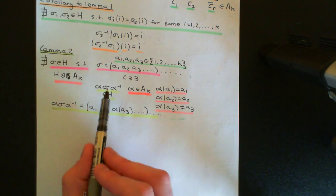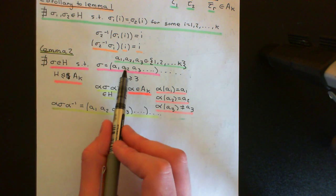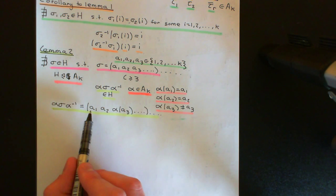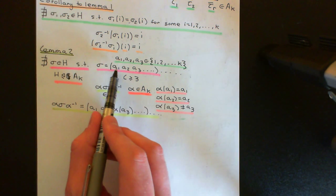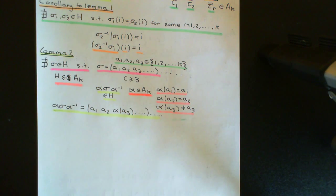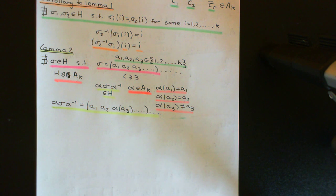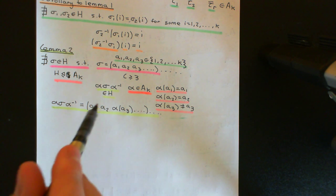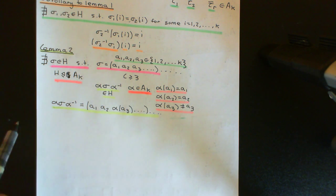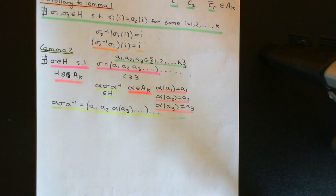I've got another element that must be in H, and I claim this breaks the corollary to Lemma 1 — because this is a different element to sigma (since a2 is sent onto a different element), however they both send a1 onto the exact same thing: this one sends a1 onto a2, and sigma sends a1 onto a2. That breaks the corollary, since no two elements in H can send any element of {1, ..., k} onto the same thing. So the instant you put in an element with a cycle of length ≥ 3, you cannot prevent me constructing this alpha to conjugate by and breaking the corollary.